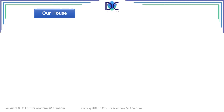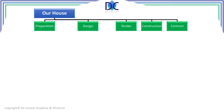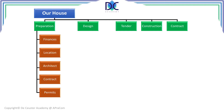Let's look at our house at level zero and decompose it. We can find the preparation, the design, the tender we have to send out, the construction itself, and the contract. We can also split these as different phases, but it depends on the size of the project. In our case, let's consider it as one project.